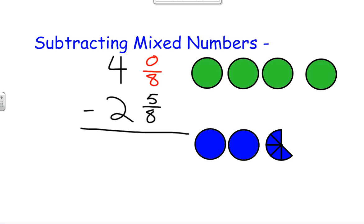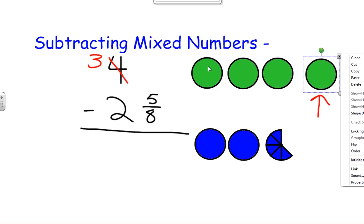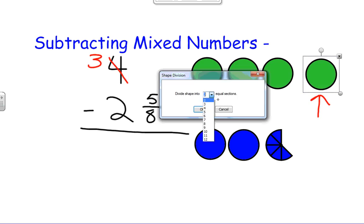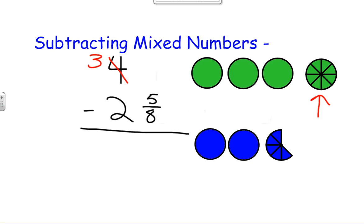And when I try to subtract 0 minus 5 over 8, well, you can't take away 5 from nothing. So what we're going to have to do is regroup or rename. So instead of having 0 eighths, I'm actually going to borrow one of the whole parts. So I'm going to use one of these, and I'm going to say I have 3 whole parts left.